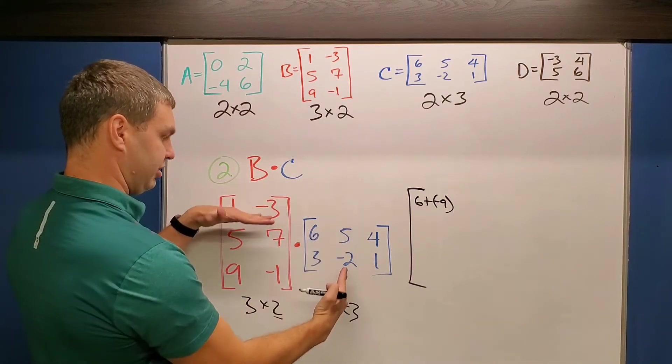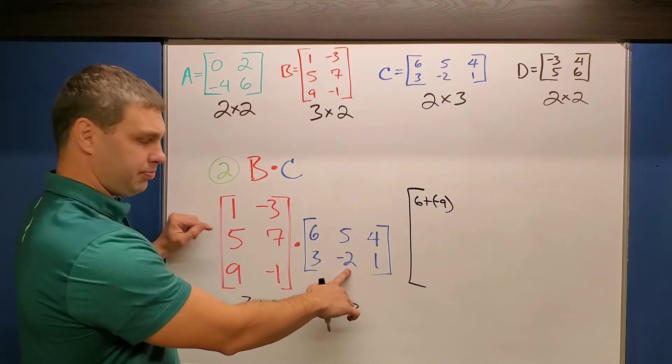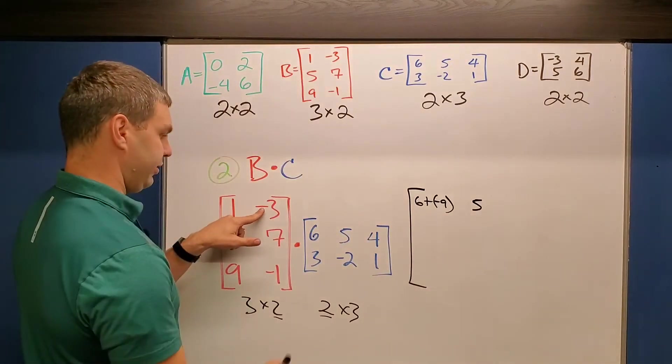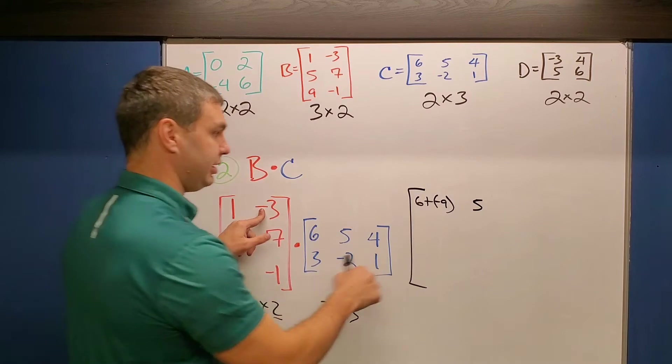So again, 1 times 5 is 5 plus -3 times -2 is a positive 6. So plus 6.